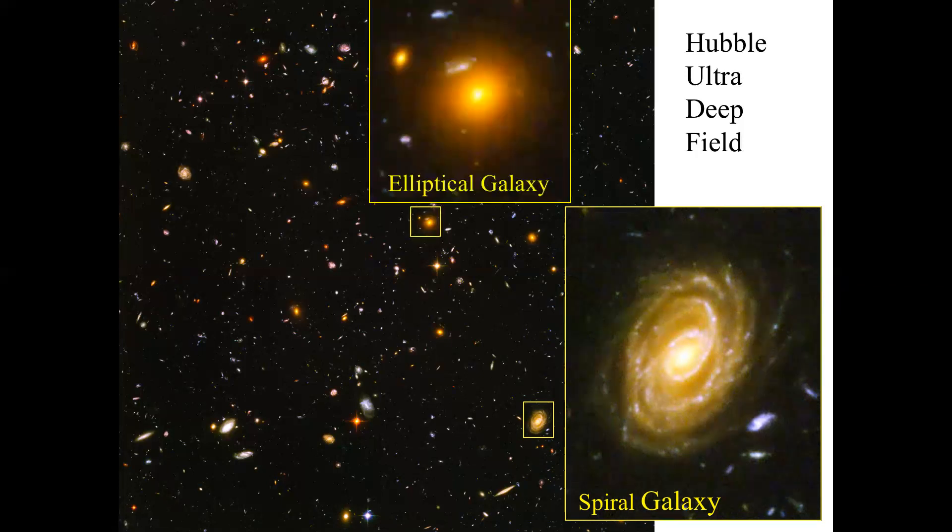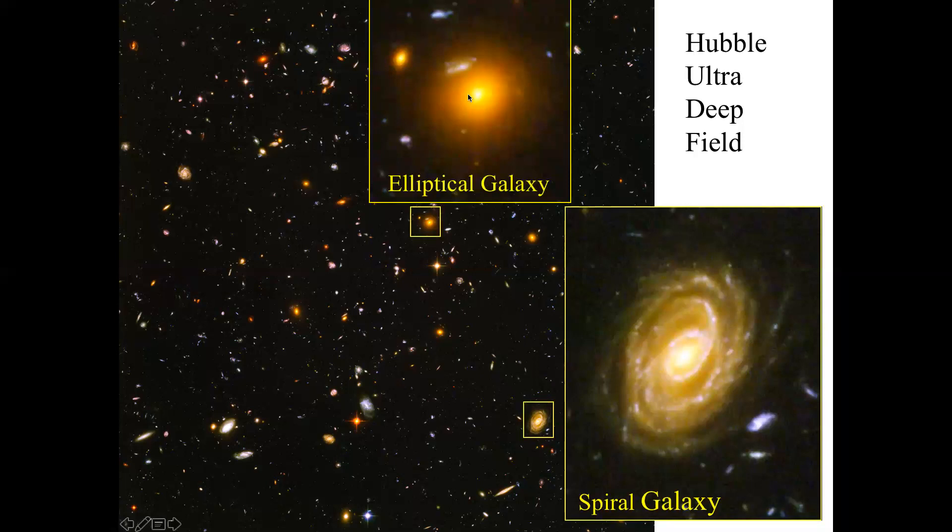But there are lots of galaxies in this field that are not spiral galaxies. Let's look at this one. This doesn't have any spiral shapes, doesn't seem to have any disk-like structure, just seems to be an orange blob of stars. And this is actually the most common type of galaxy in the universe. Even more common than spiral galaxies are these elliptical galaxies.